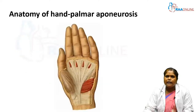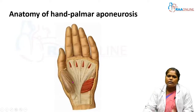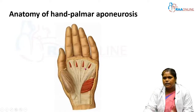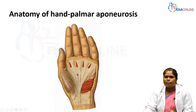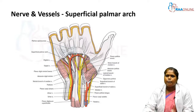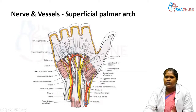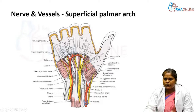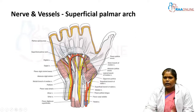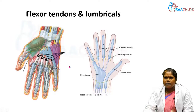We will see the layers one by one. Once we remove the skin and superficial fascia we reach the deep fascia. Here we can see the triangular palmar aponeurosis, which is the deep fascia of the palm. Once we reflect this palmar aponeurosis, we see the neurovascular bundles — the superficial palmar arch and the digital nerves shown in yellow.